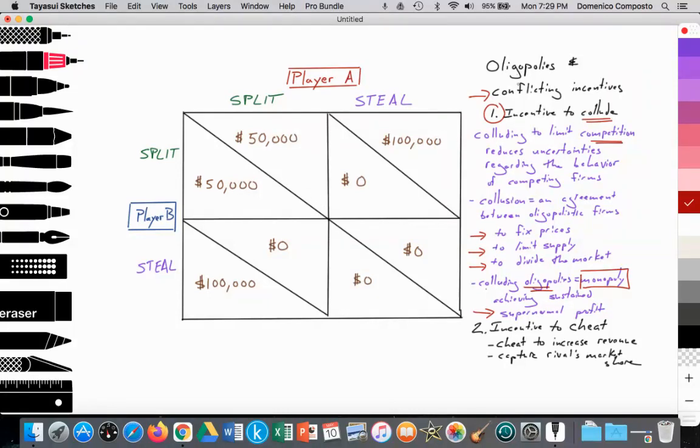But unfortunately, we see that oligopolies also have the conflicting incentive to cheat. Perhaps player A and player B discuss and they decide to collectively agree to split, but then player A decides to cheat on the deal. Because they know if they get away with cheating, they can grab the full $100,000 while their opponent gets nothing. That's a big incentive as well that can potentially break the collusion and lead to one firm cheating and the entire collusive agreement falling apart.